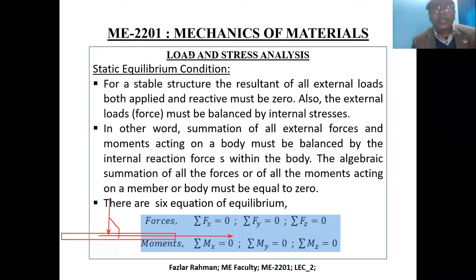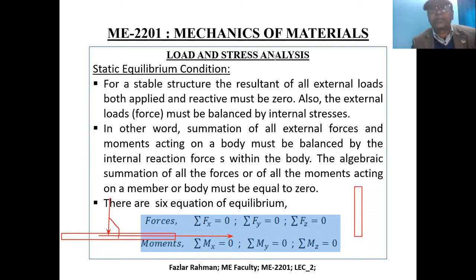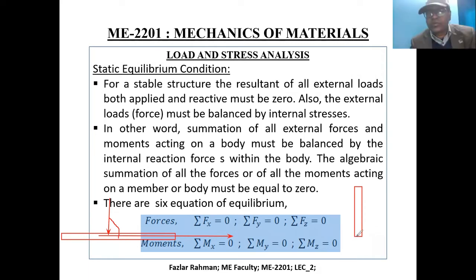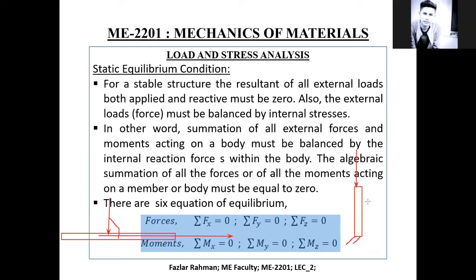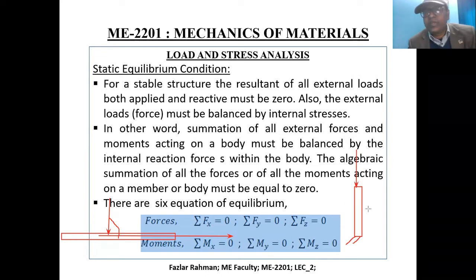Then what is the column? If we have a column, the load working on it is a compressive load parallel to the longitudinal axis — that means the load makes zero angle with the longitudinal axis of the member.